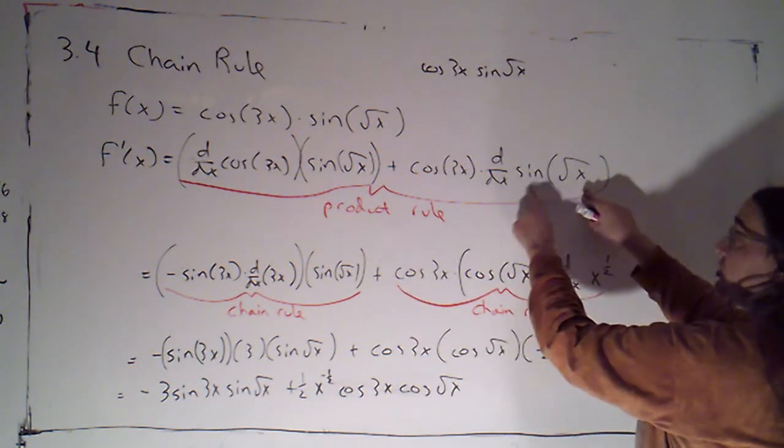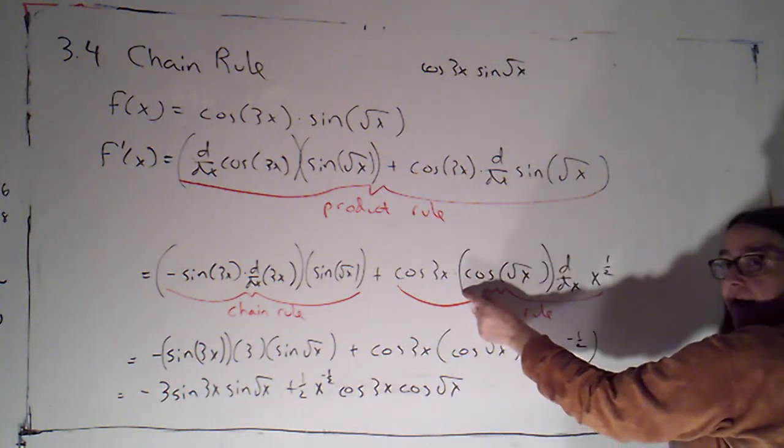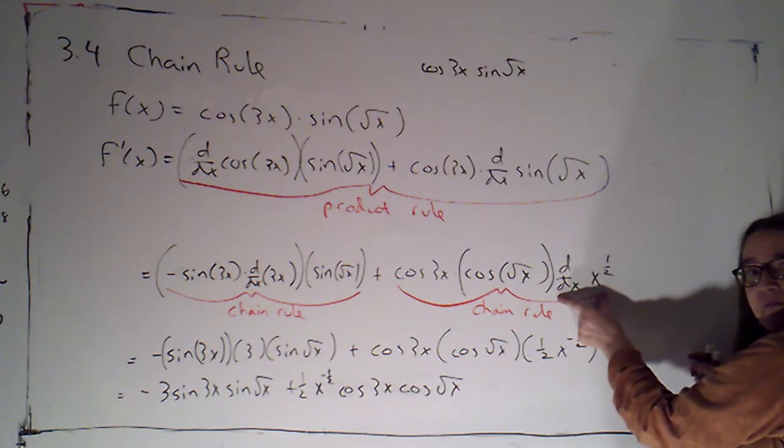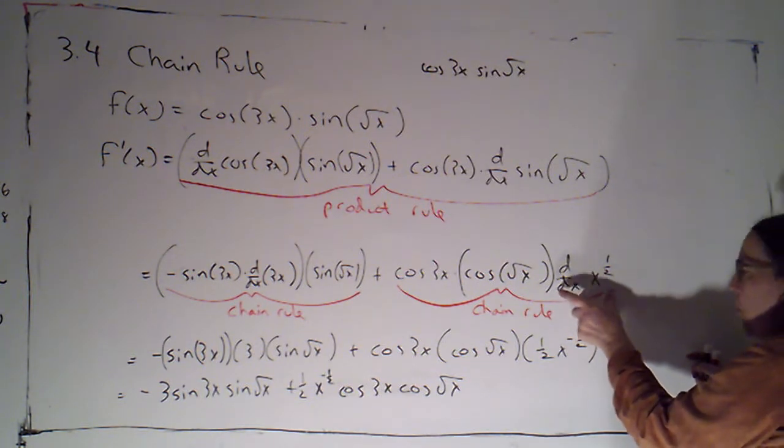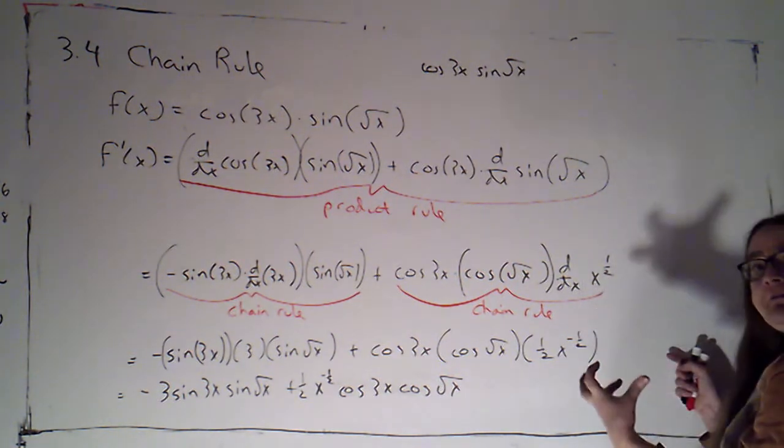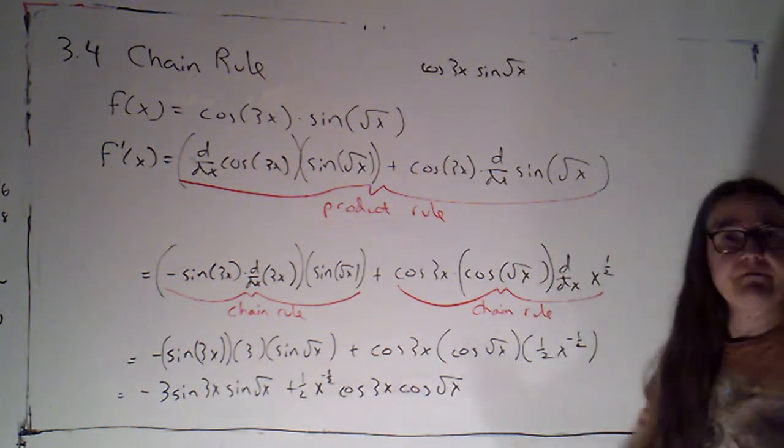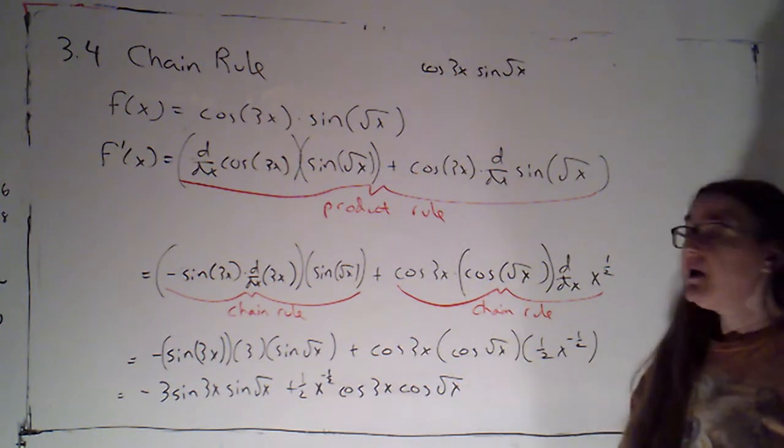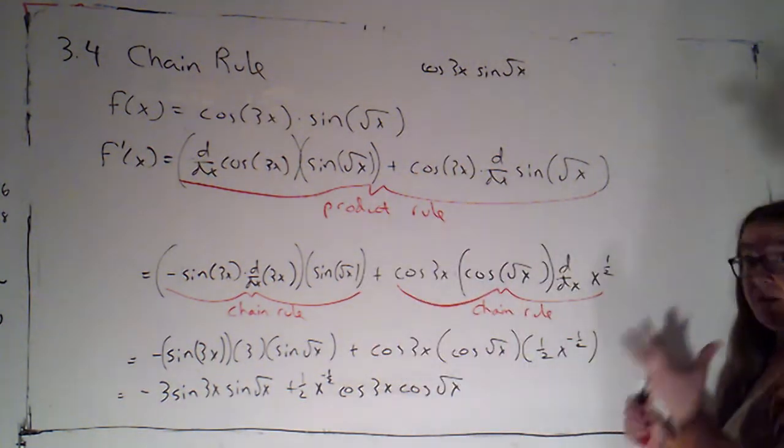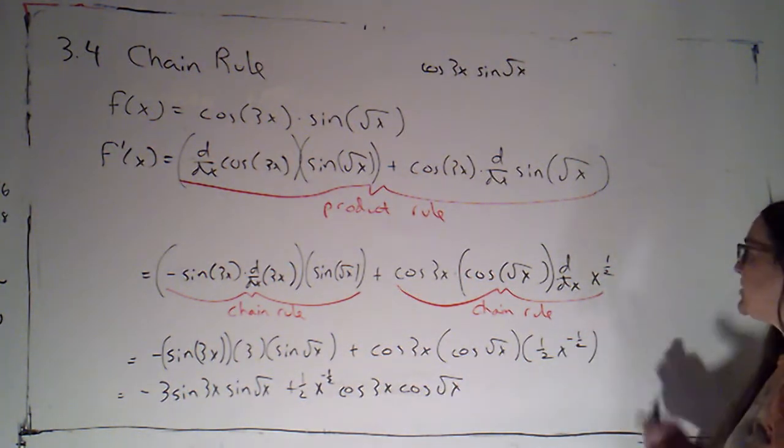So this was again a function composition where the inside part was root x. So the derivative of sine is cosine, that's evaluated at root x. And then I have to take the derivative of that square root. Now you'll notice, once I'm going to take the derivative, I rewrote that as x to the 1 half. Often I'll do that at the very beginning of a problem. I'll just write it as x to the 1 half so that I'm writing it the same way every time. Perfectly acceptable to keep it as root x and only rewrite it as the fractional exponent when that becomes useful, which is what I did here.